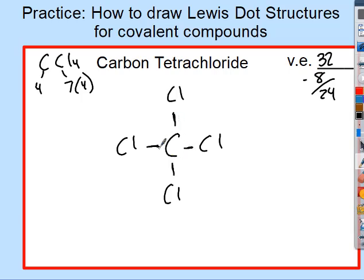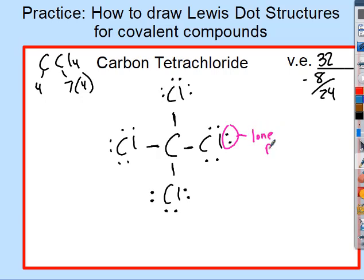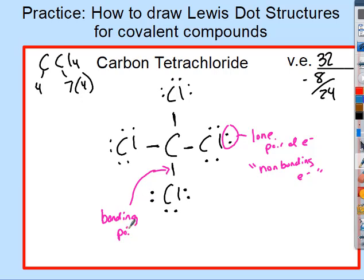The central atom carbon has two, four, six, eight — its octet is full. Each chlorine only has two electrons right now, so each needs six more. Six times four is twenty-four, so we can add them as lone pairs. Lone pairs are also referred to as non-bonding electrons because they are not involved in bonding. The lines are bonding pairs of electrons — CCl4 has four bonding pairs and each chlorine has three lone pairs.